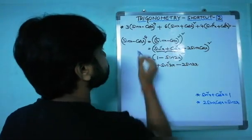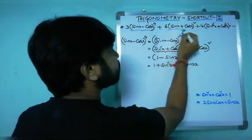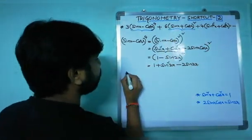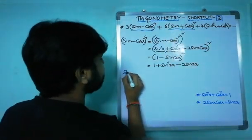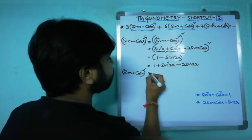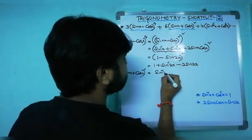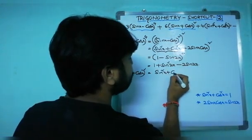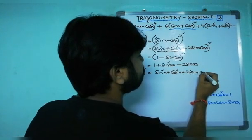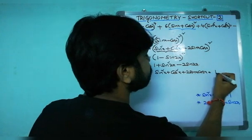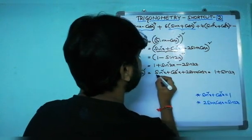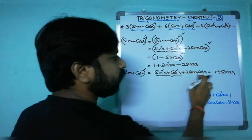Now let us consider the second part. (sinx + cosx)² is of the form (a + b)². Expanding: sin²x + cos²x + 2sinx·cosx = 1 + sin2x, because sin²x + cos²x = 1 and 2sinx·cosx = sin2x.